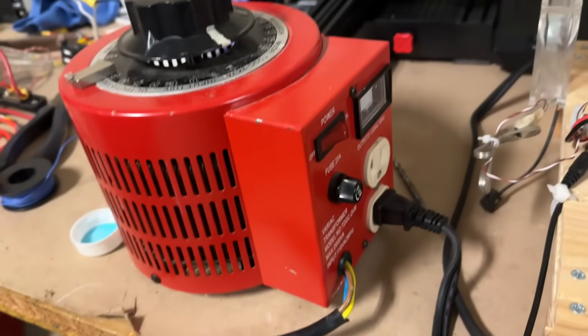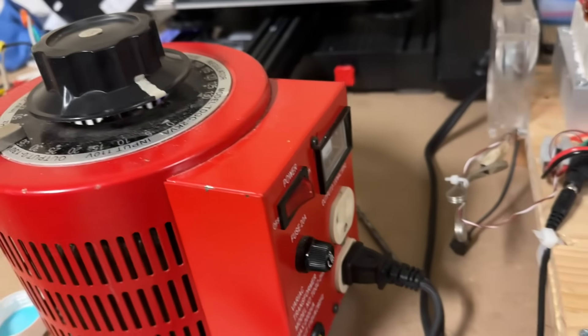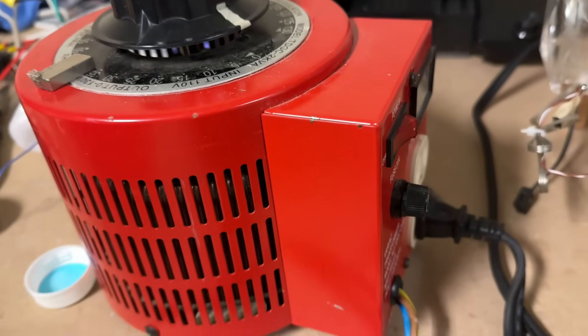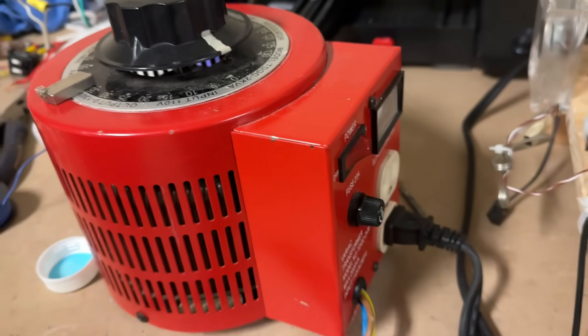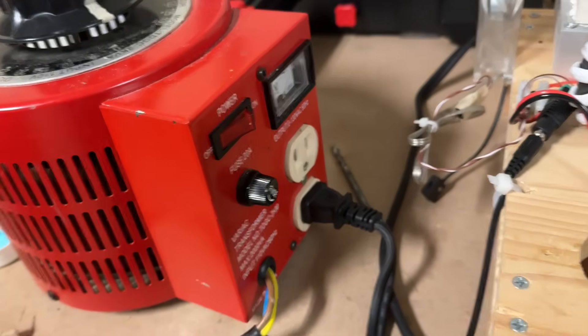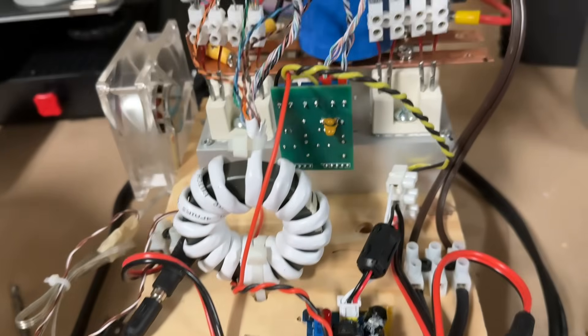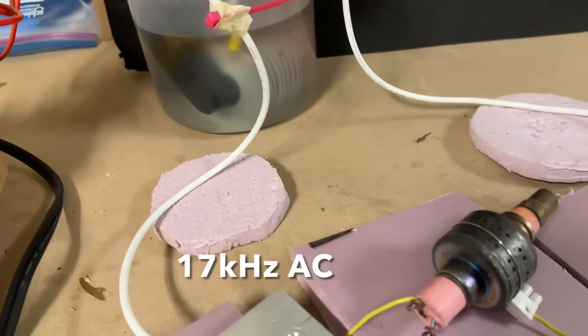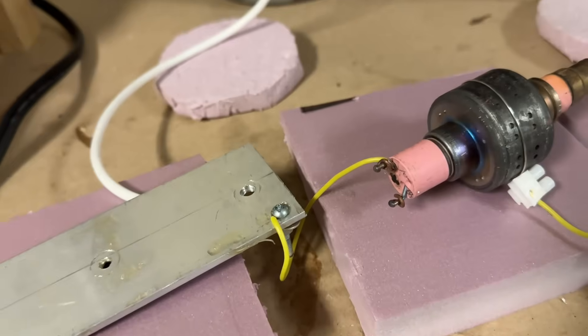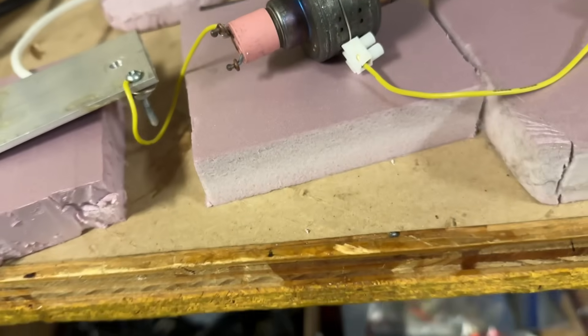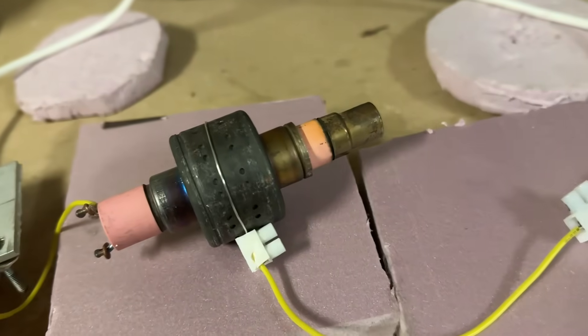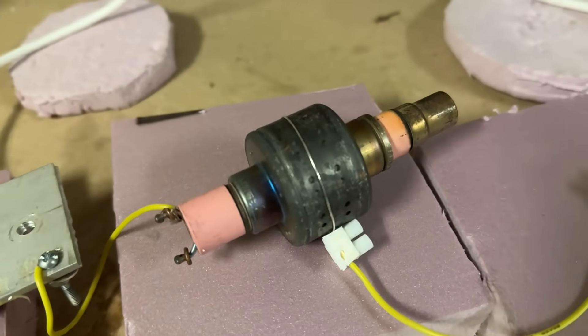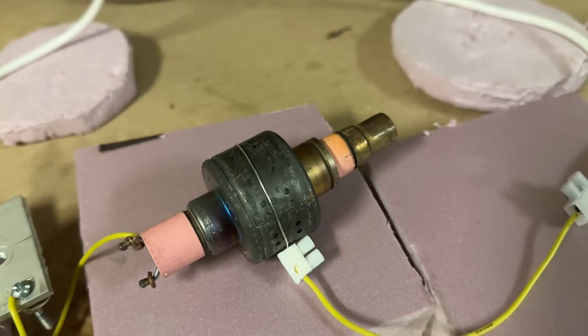In order to do that, I have a homemade flyback transformer driven by this 2 kilowatt variac. This is the driver circuitry for the flyback. This flyback can put out tens of thousands of volts. I've connected the output of this flyback across this stripped down magnetron.